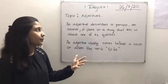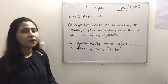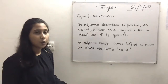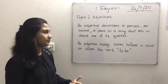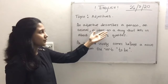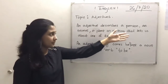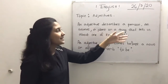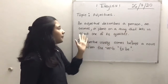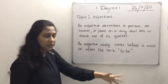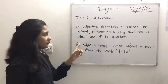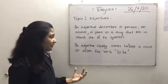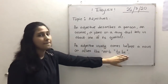Today we will be learning about adjectives. First, we need to know what an adjective is. An adjective describes a person, an animal, a plant, or a thing — it tells us about one of its qualities. An adjective usually comes before a noun or after the verb 'to be'.